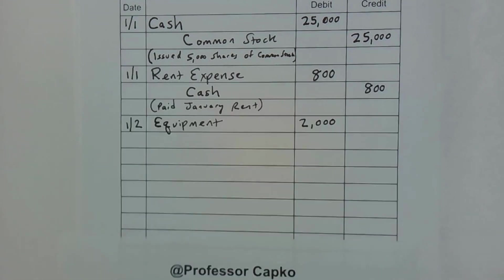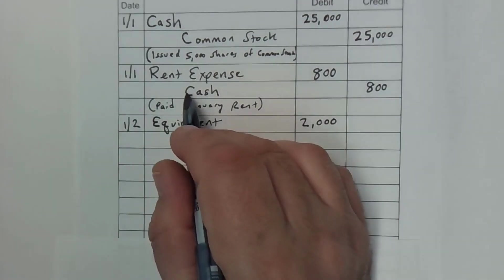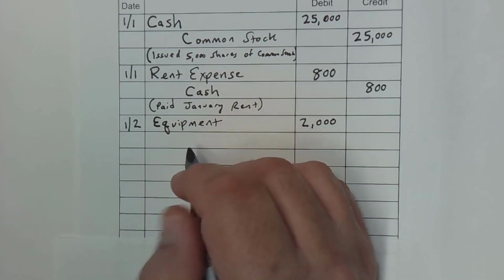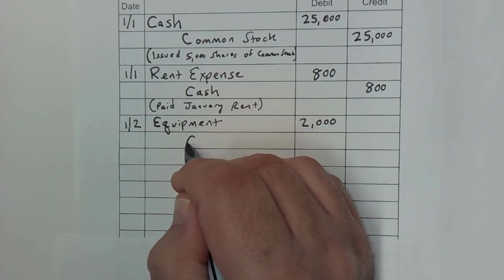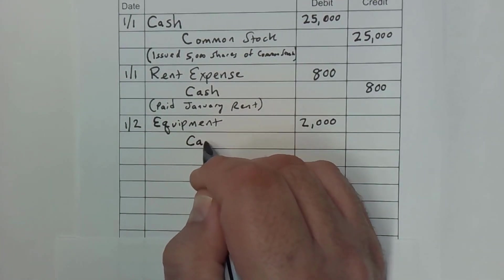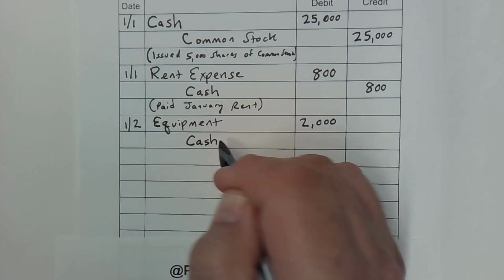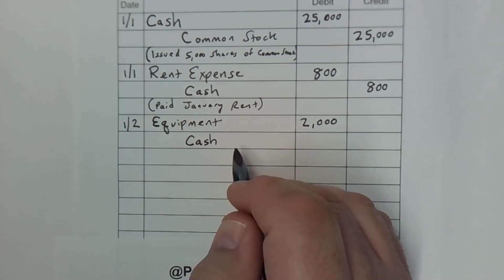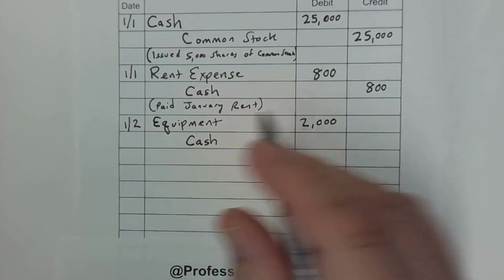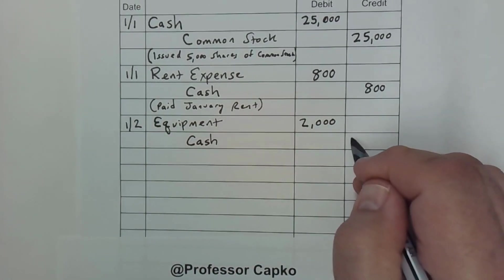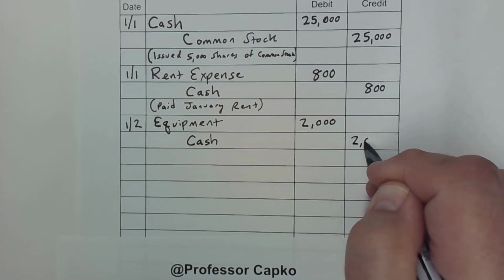And now I'm going to credit my cash. Again, credits come second and they're indented. And that's for the full $2,000.